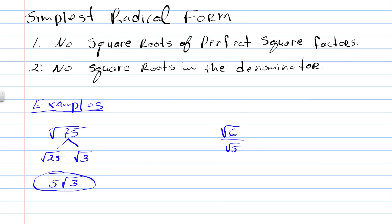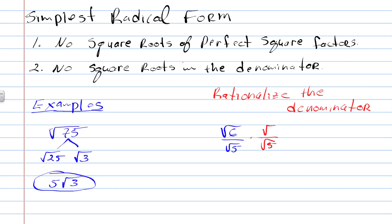This second example illustrates the rule of no square roots in the denominator. We have the square root of 6 over the square root of 5, and we're not allowed to have a square root in the denominator. So we use a technique called rationalizing the denominator. We multiply by the fraction square root of 5 over square root of 5 — that's equivalent to 1, so we're not changing the value. Multiplying the numerator gives square root of 30, and square root of 5 times square root of 5 gives square root of 25, which is 5. So our answer is square root of 30 over 5.